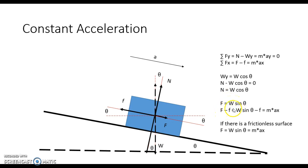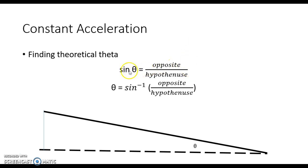We can rewrite the x-direction equation as W sine theta minus lowercase f equals m times the acceleration in the x direction. If the surface is frictionless, then W sine theta equals m times a_x. To find theta: if we know the height the ramp has been raised (opposite side) and the length of the ramp (hypotenuse), then sine theta equals opposite over hypotenuse, and we find theta by taking the inverse sine.